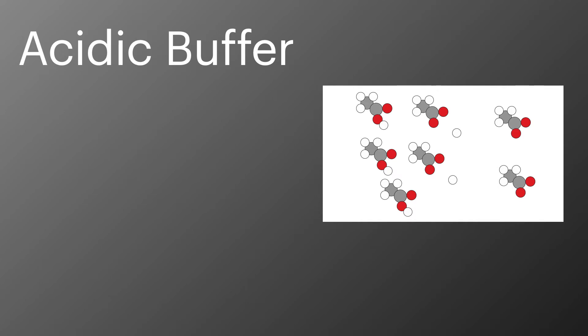In the AQA chemistry specification we're much more focused on acidic buffers than we are on basic buffers. In an acidic buffer there needs to be three different species in the equilibrium: HA, H plus and A minus.